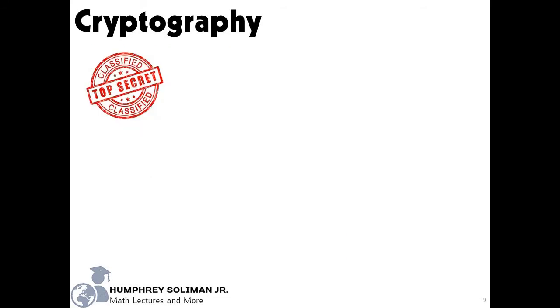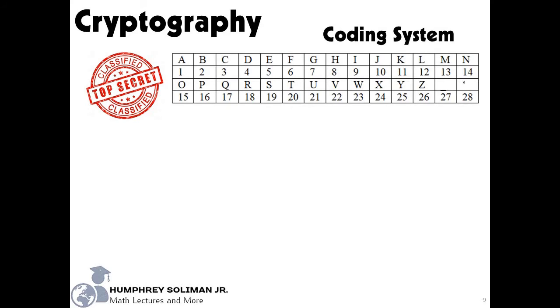We start the activity by introducing a coding system. Each letter in the alphabet is matched with a number, as A is 1, B is 2, and so on. Characters such as space is coded as 27.